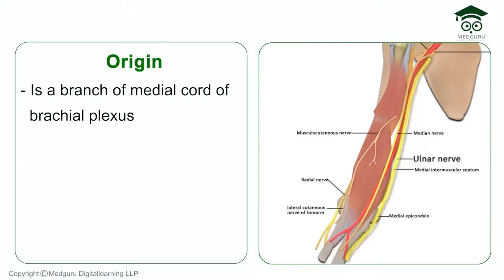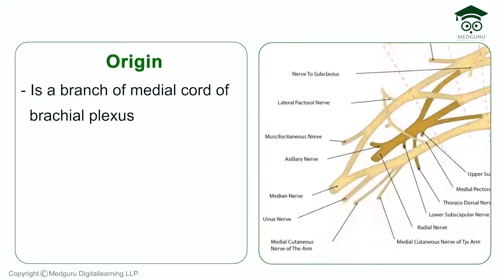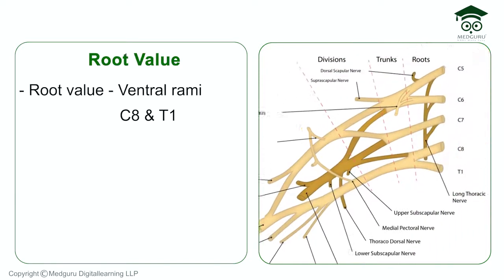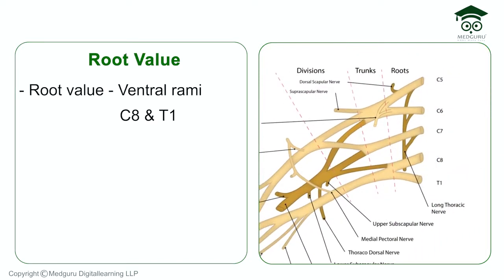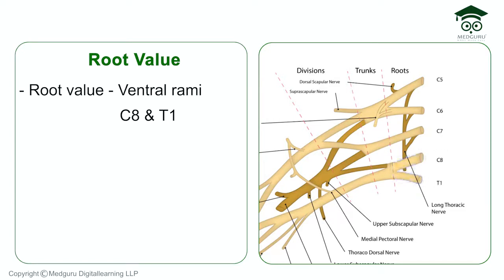Starting with the origin: the ulnar nerve is a branch of the medial cord of the brachial plexus. It originates in the axillary region. The ulnar nerve has a root value of ventral rami of C8 and T1, which is the same as the root value of the medial cord.